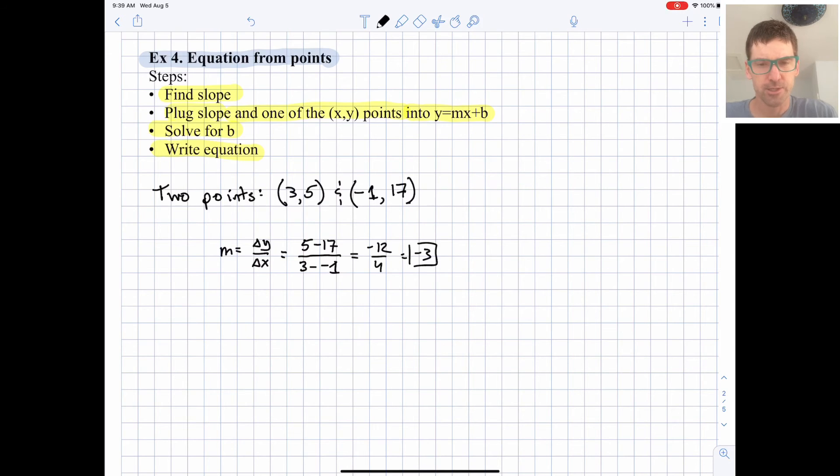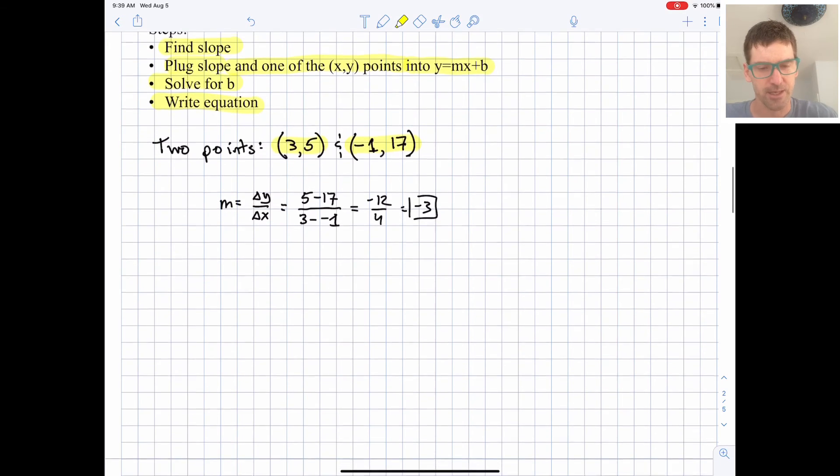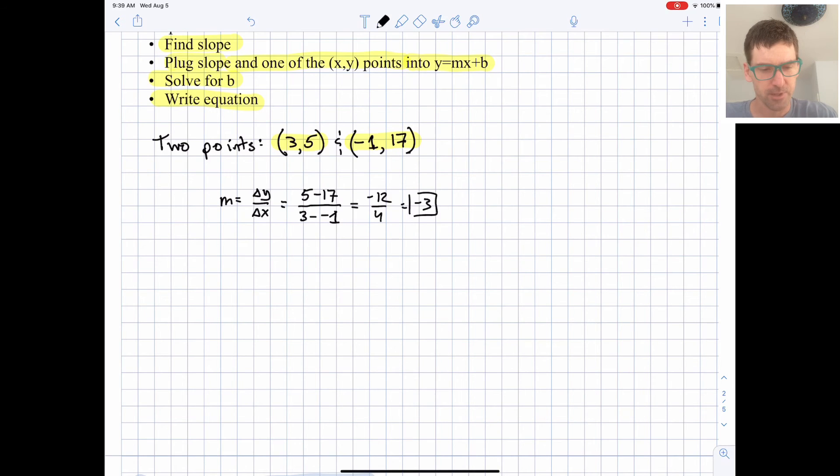We're going to choose one of these two sets of points. I think the 3, 5 is easier, it's got smaller numbers, just positive numbers. So a little less likely to make a mistake. We're going to plug into y equals mx plus b the information we know.